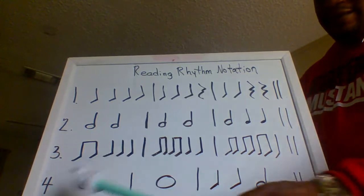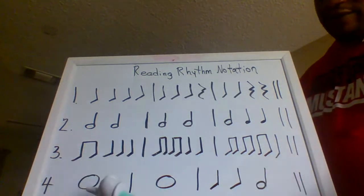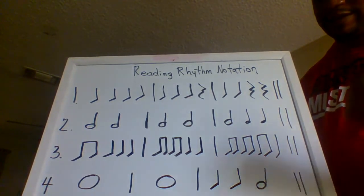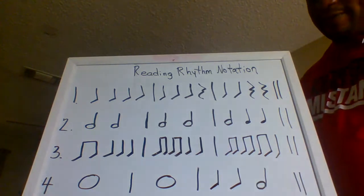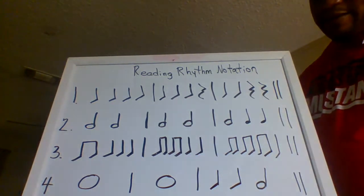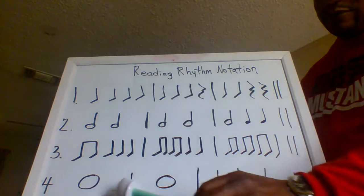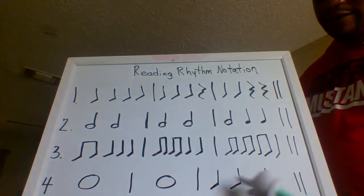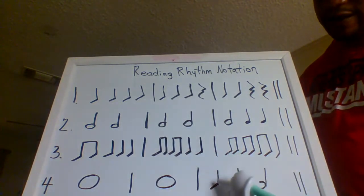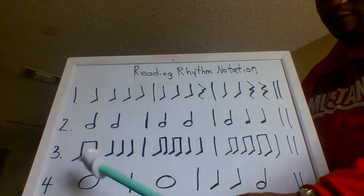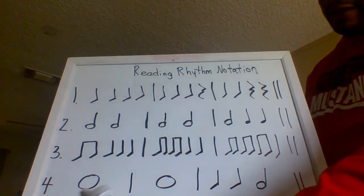Line four includes whole notes. Everybody remember what a whole note is? It's that circular note — it gets four beats. We clap on one and hold through four. Of course we have a couple of quarter notes included and a half note at the end, so don't forget to count those.